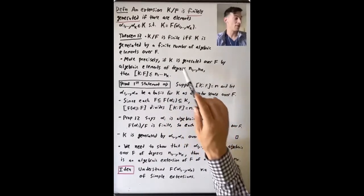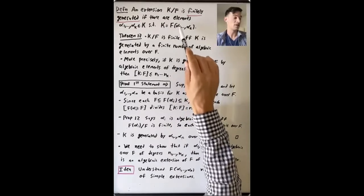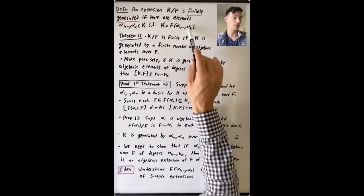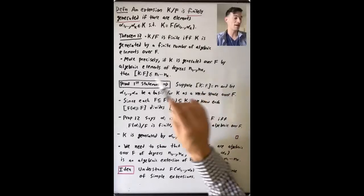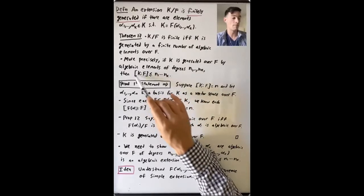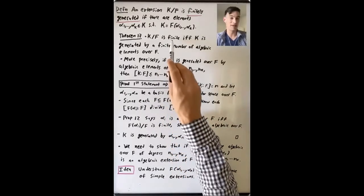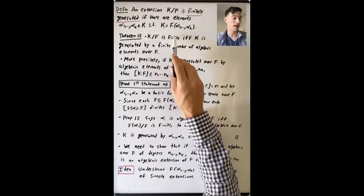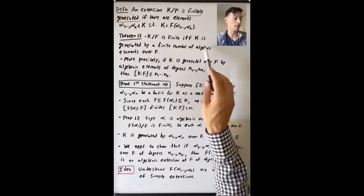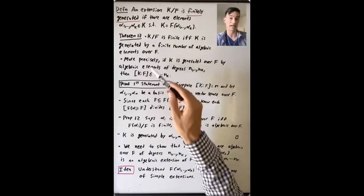Knowing something about the degrees of the individual elements — the degree of α₁ over f, the degree of α₂ over f — tells you something about the degree of the whole extension generated over f by this set of elements. We're going to start by proving the forward direction: if k over f is finite, then k is generated by a finite number of algebraic elements over f. We'll prove that direction, then come back and prove the converse and the second statement together.